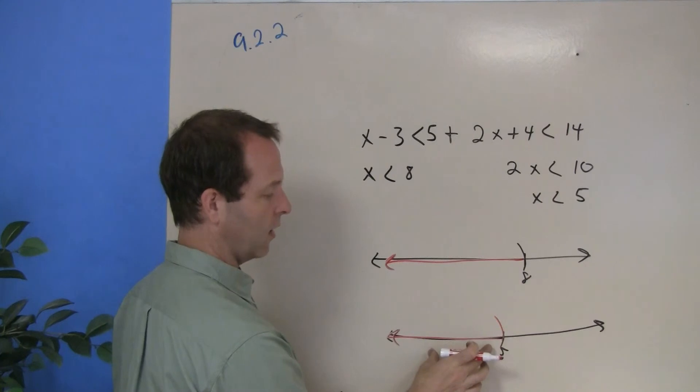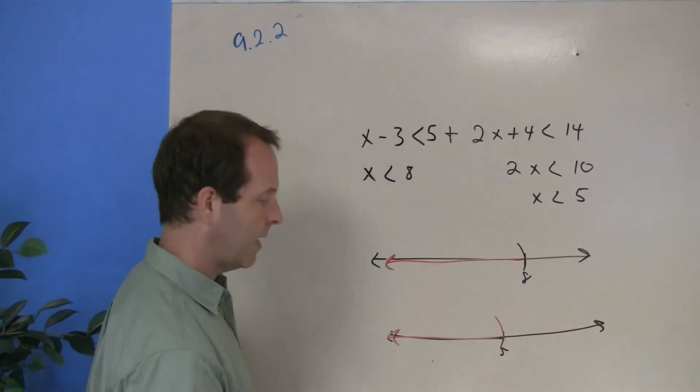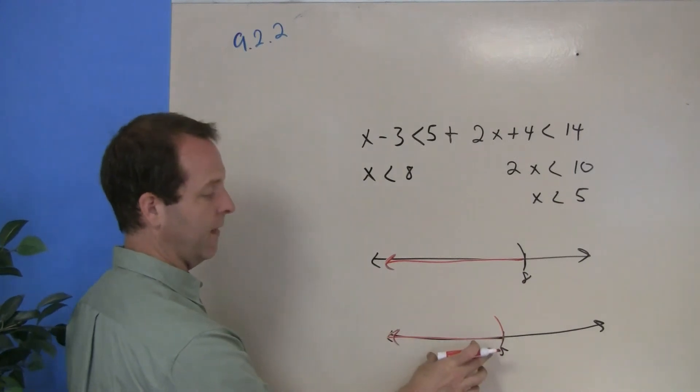So therefore, the values that are common to both of these graphs is this one down here. So I would say my solution set graphically would be this graph.